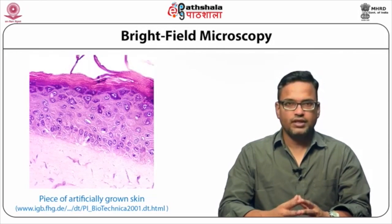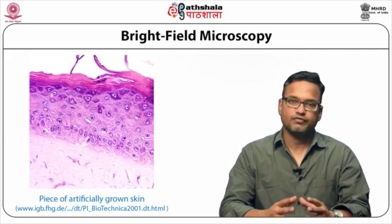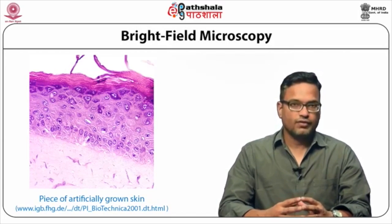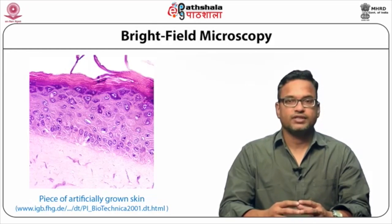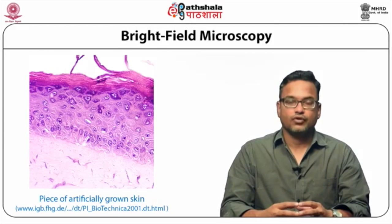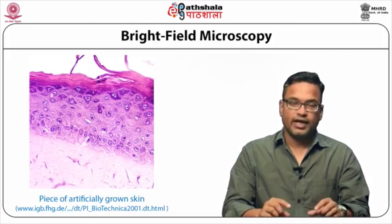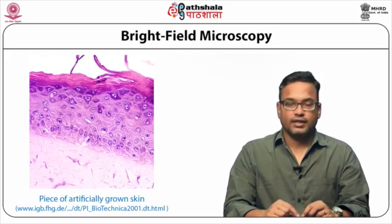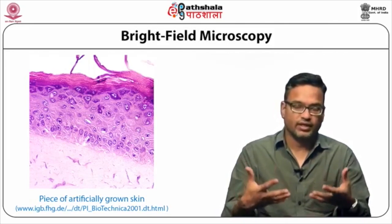Bright field microscopy is the commonly used method through which a sample is viewed, and it is available with most microscopes. Once you have put your sample on a slide with a cover slip on it, you illuminate that sample using a transmitted light. The light gets absorbed by the samples and then you can view it through the objective to your eyes. The light transmitted through the sample gets absorbed due to its differential refractive index in each area, giving you a dark image in a white background because the light is being illuminated from the bottom.